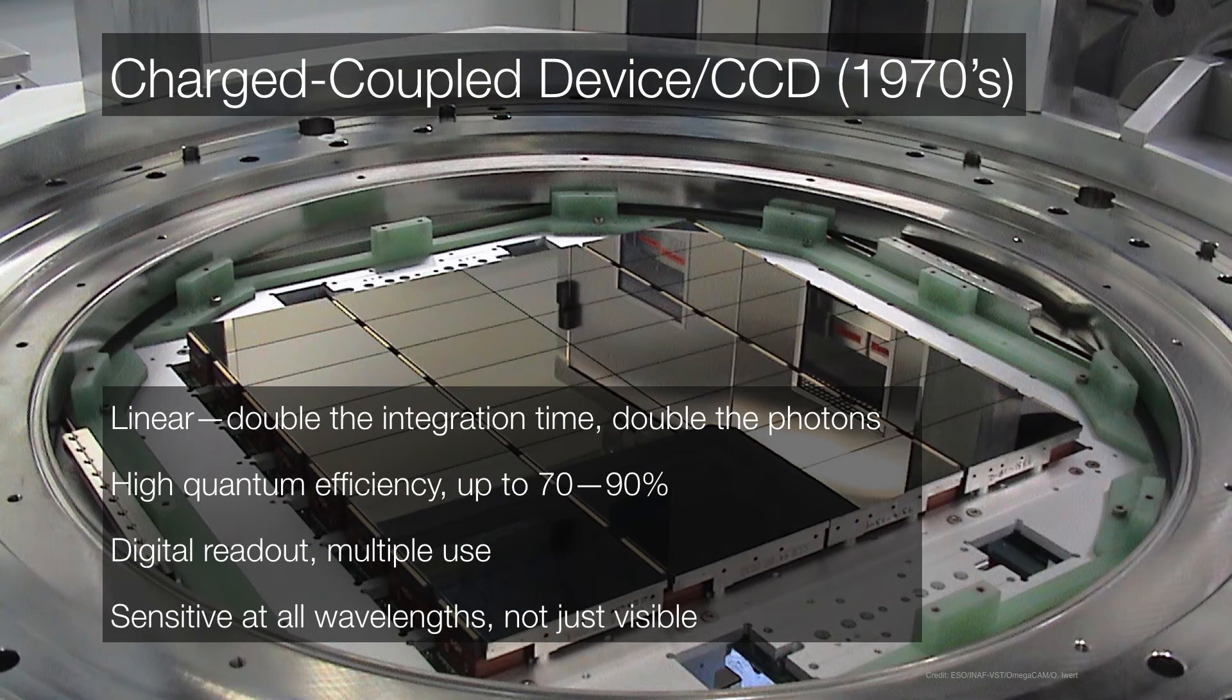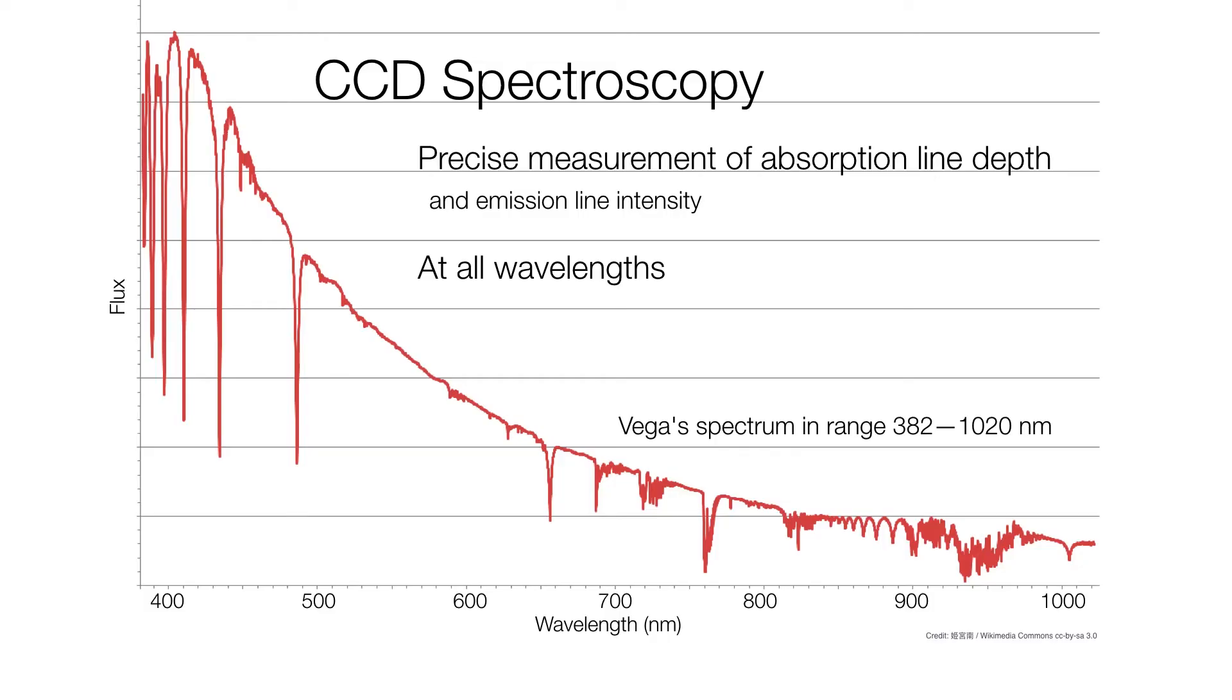And just as we saw before with photographic plates, not only can we capture images with CCDs, but we can capture highly detailed spectra. And because of the digital nature of CCDs, we can not only identify the wavelengths at which absorption lines occur, but we can also measure how deep or how strong those absorption lines are.